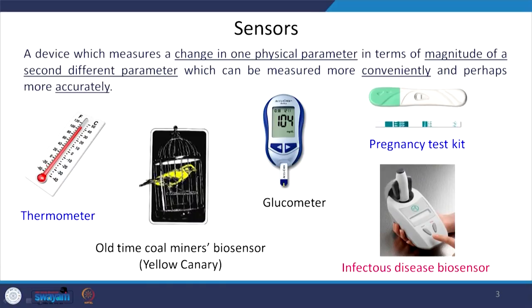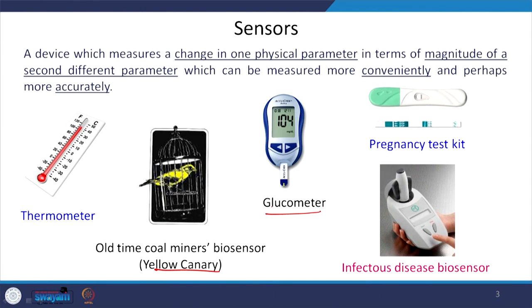Another example is this old-time coal miners biosensor: the yellow canary bird which coal miners used to bring to coal mines in old times. When there was an unpleasant situation — say some leakage of methane gas — it would start crying, so they knew it was time to evacuate the mines. They chose a yellow bird because they wanted to see it easily even in the dark. A conventional glucometer measures current; it is an electrochemical sensor that translates the change in current in terms of glucose concentration in blood.